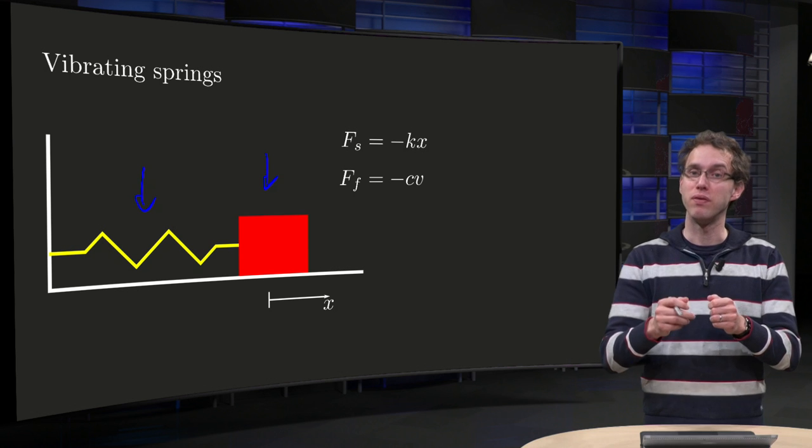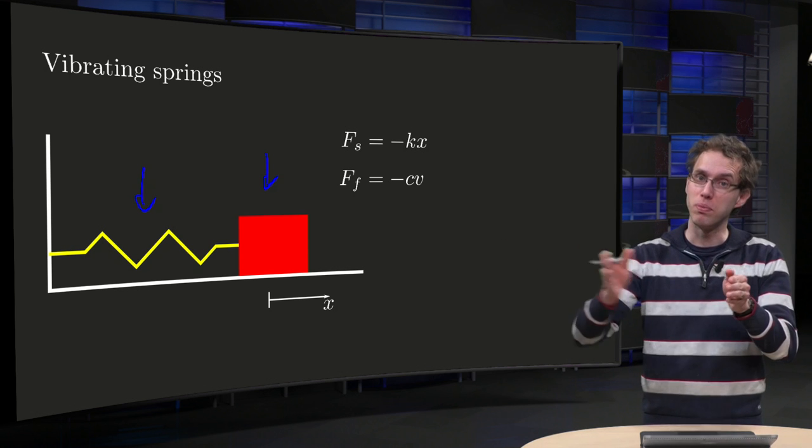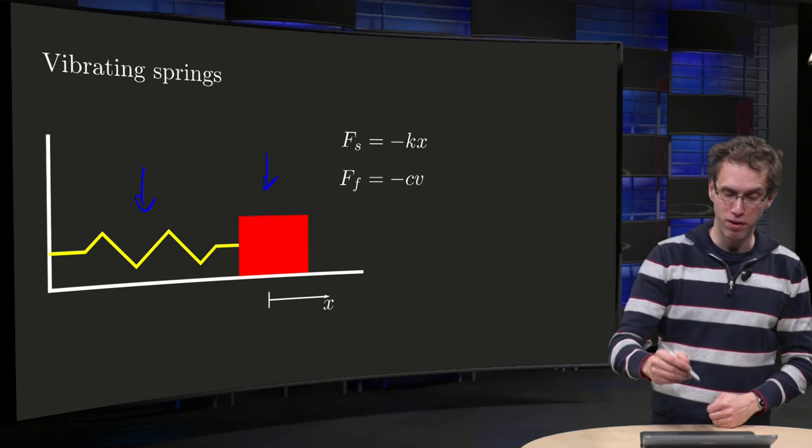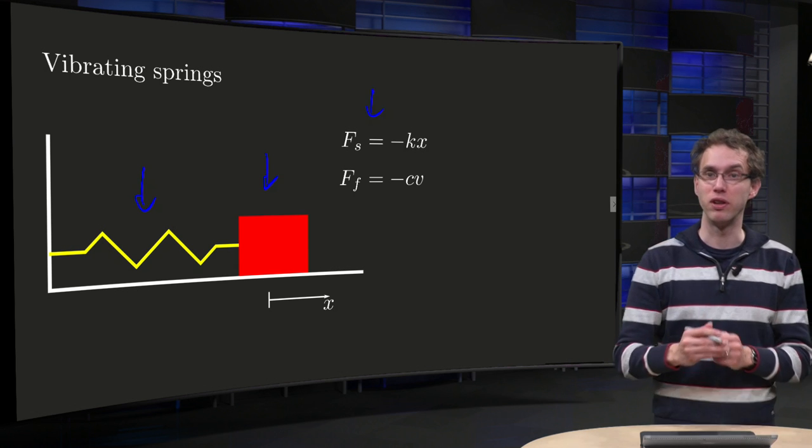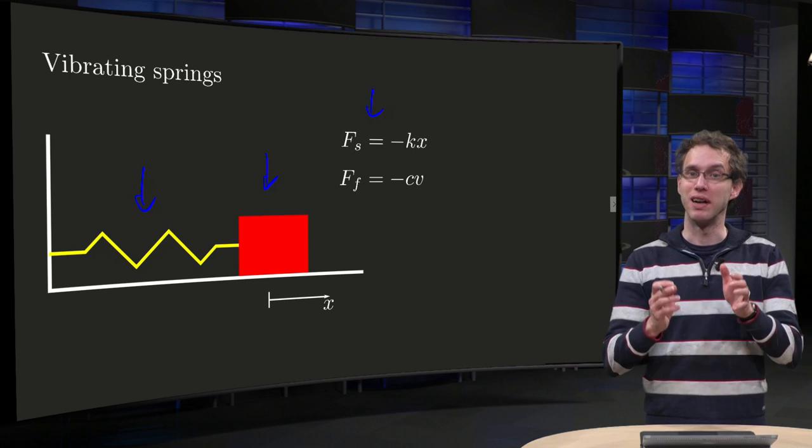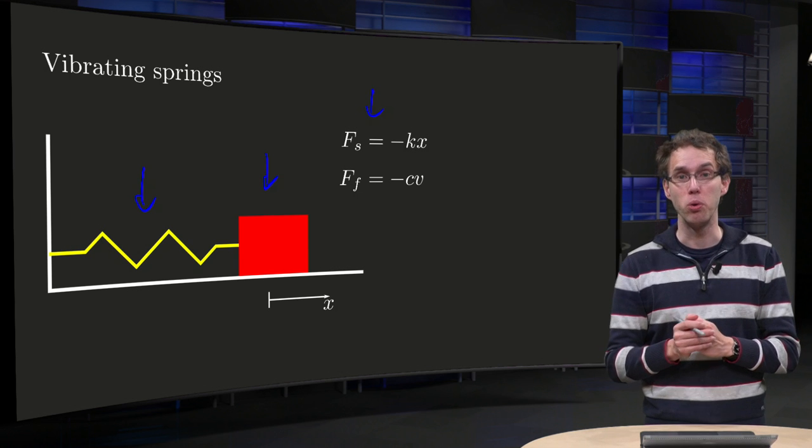Well, if we have some positive x, the spring pulls back, so we have a spring force Fs which is modeled as minus k times x, where k is some constant. Well, this is called Hooke's law.